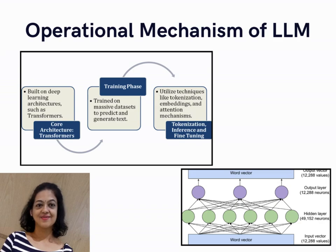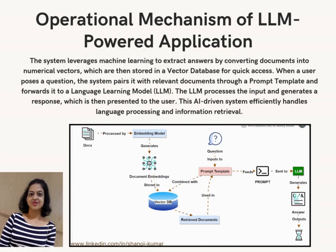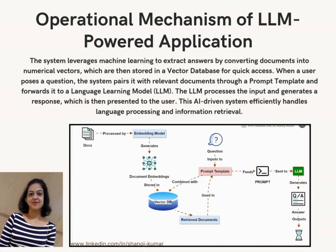This architecture is used in language modeling, word embedding refinement, neural machine translation, and classification tasks. In an LLM-powered application, the system leverages machine learning to extract answers by converting documents into numerical vectors, which are stored in a vector database for quick access. When a user poses a question, the system pairs it with relevant documents through a prompt template and forwards it to the LLM. The LLM processes the input and generates a response, which is then presented to the user.